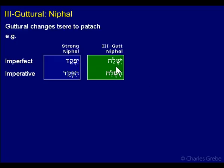It falls apart here a little bit because you don't have the third component. But even in the regular paradigm, you don't always have that either. So it's not really much loss here. Your signs are still here for the Niphal, and this won't create problems when you read.